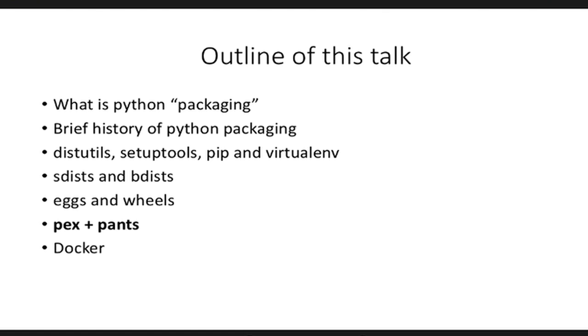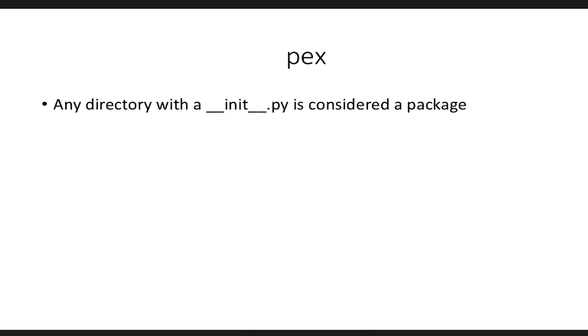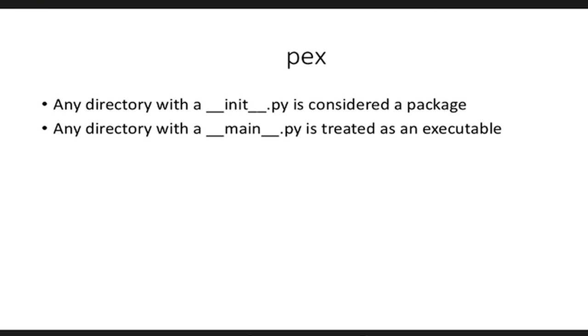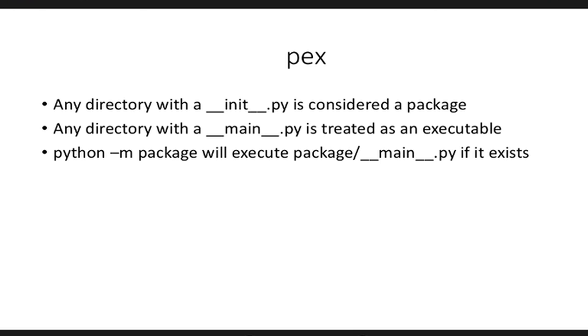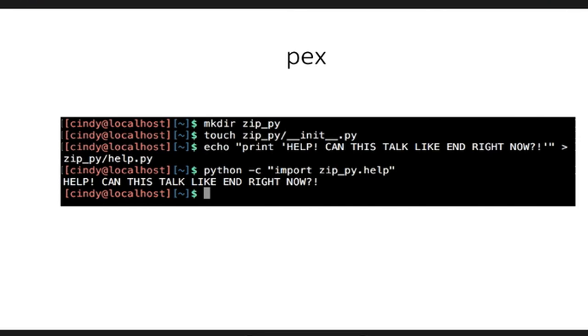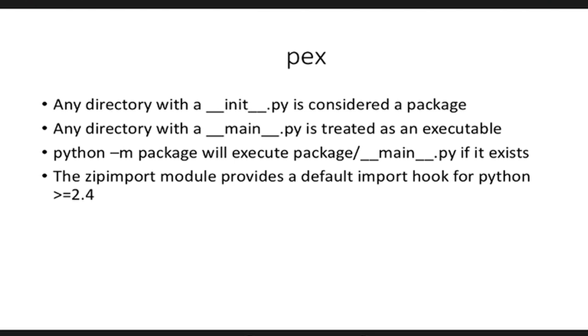Let's understand what Pants and Pex is. If you remember the history of Python deployment slide, Pants and Pex came into the scene in 2011, evolving out of a project called Twitter Commons. Let's recap: any directory with an __init__ file is called a package, any directory with a __main__ file is treated as an executable, and in Python your packages can also exist in the form of zip files. I'm creating a directory called zippy, creating an __init__ file to make the package importable.